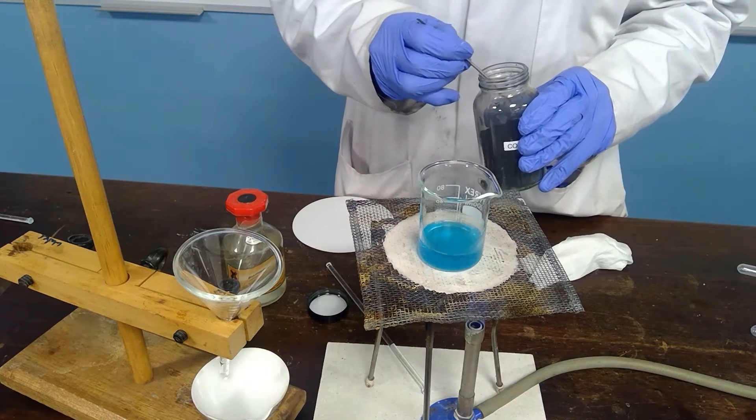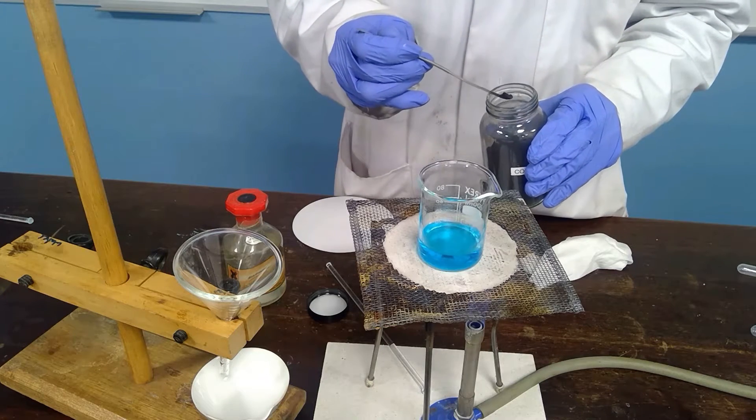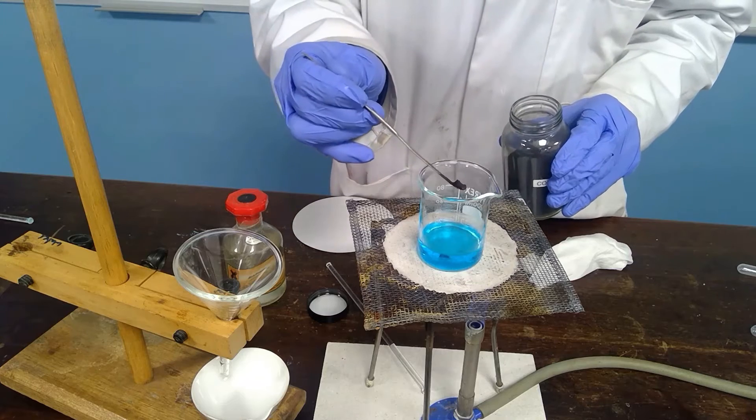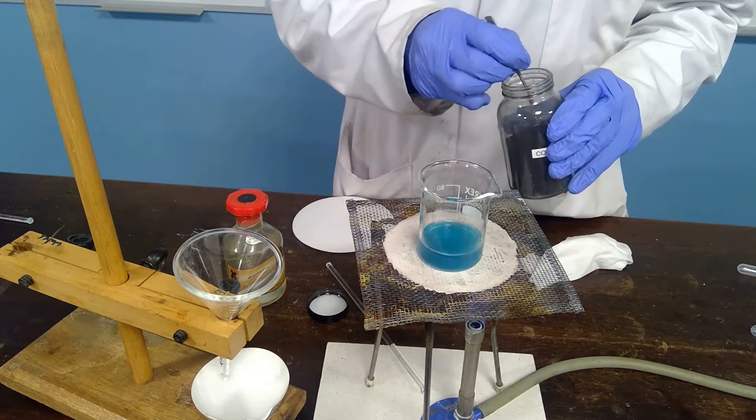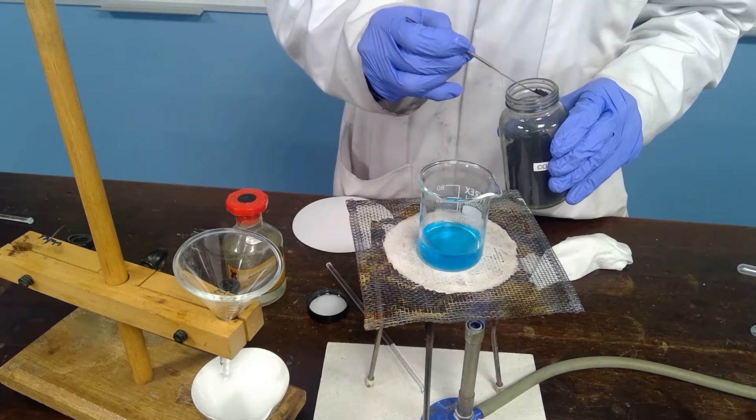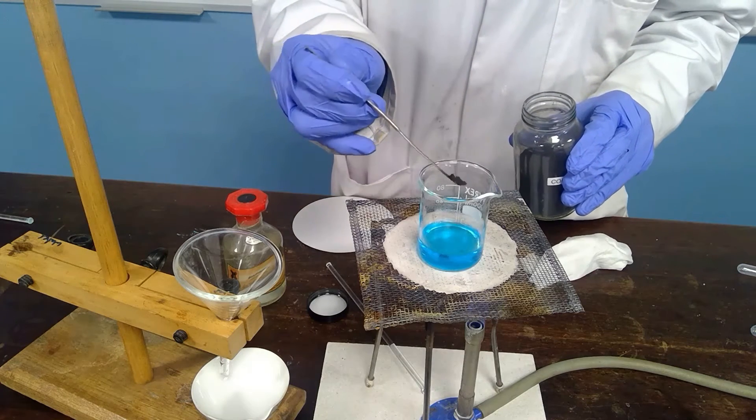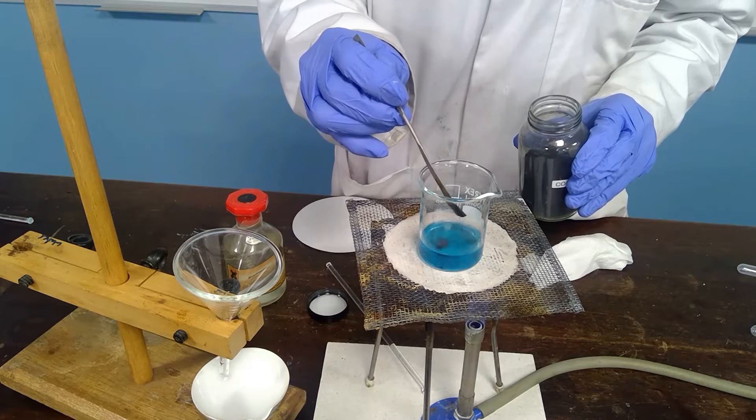As it reacts it disappears. It disappears because it reacts with the sulfuric acid so we know at this point that we definitely have an excess of sulfuric acid. Each time we add the black copper oxide it reacts to form the blue copper sulfate.